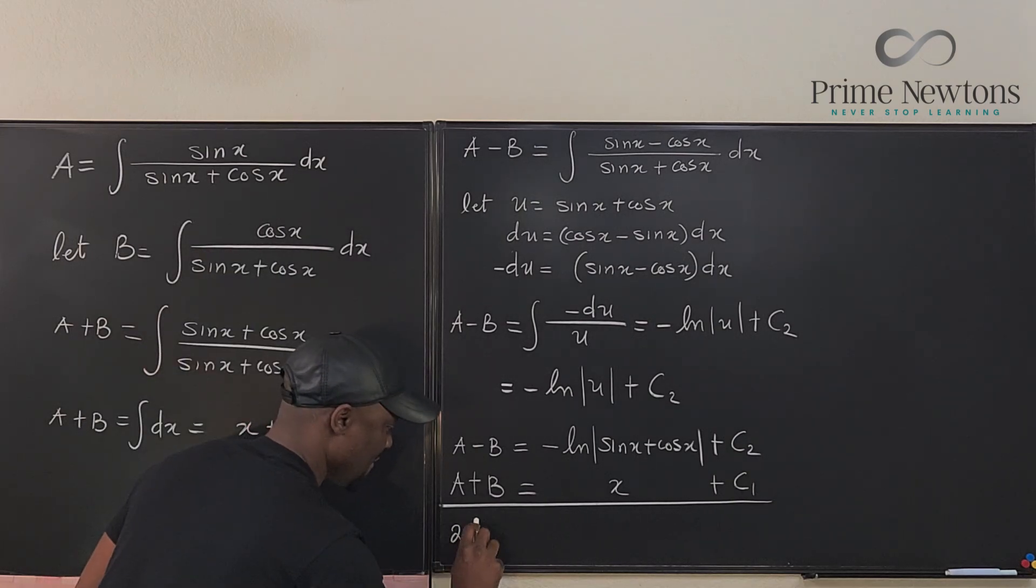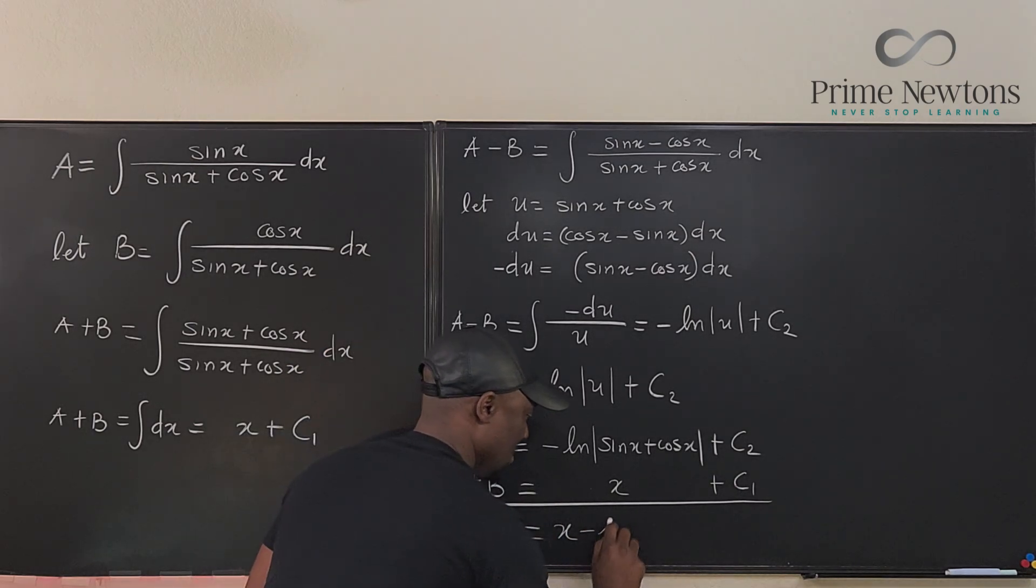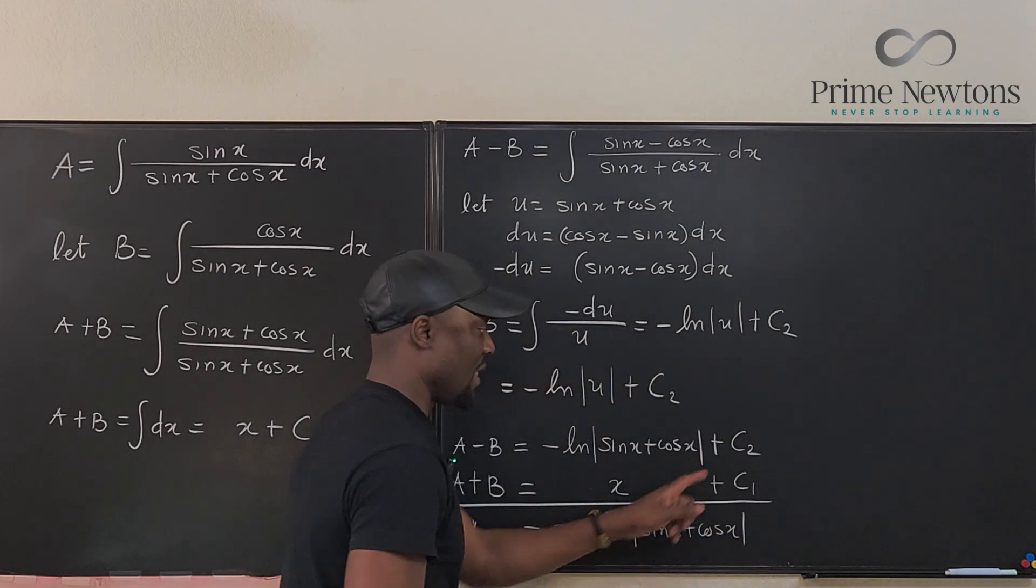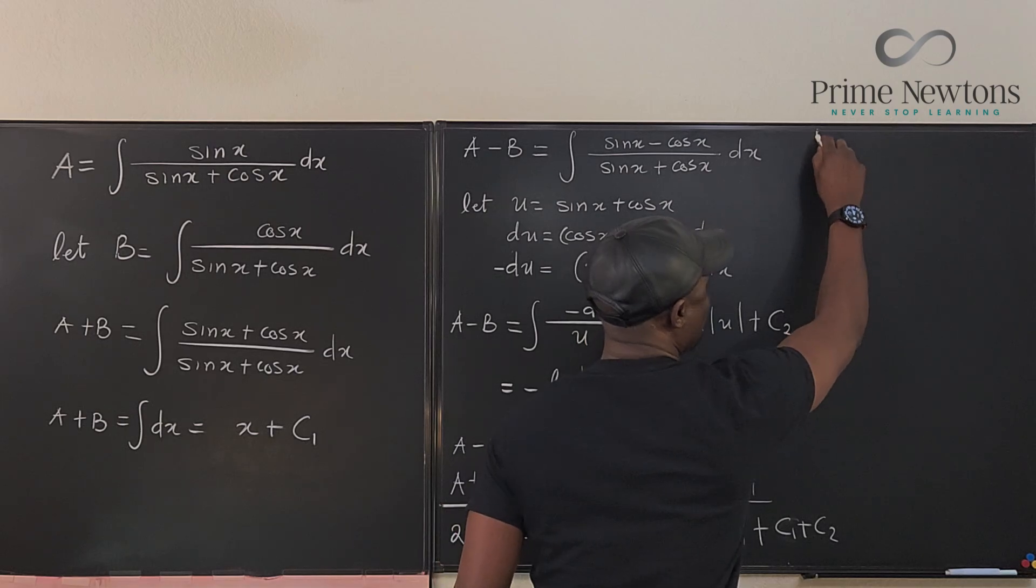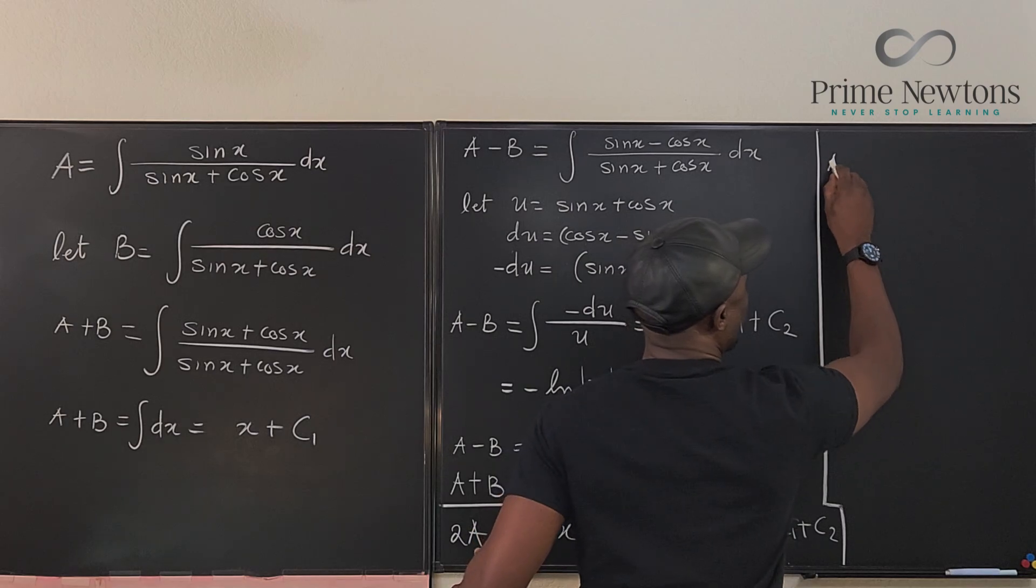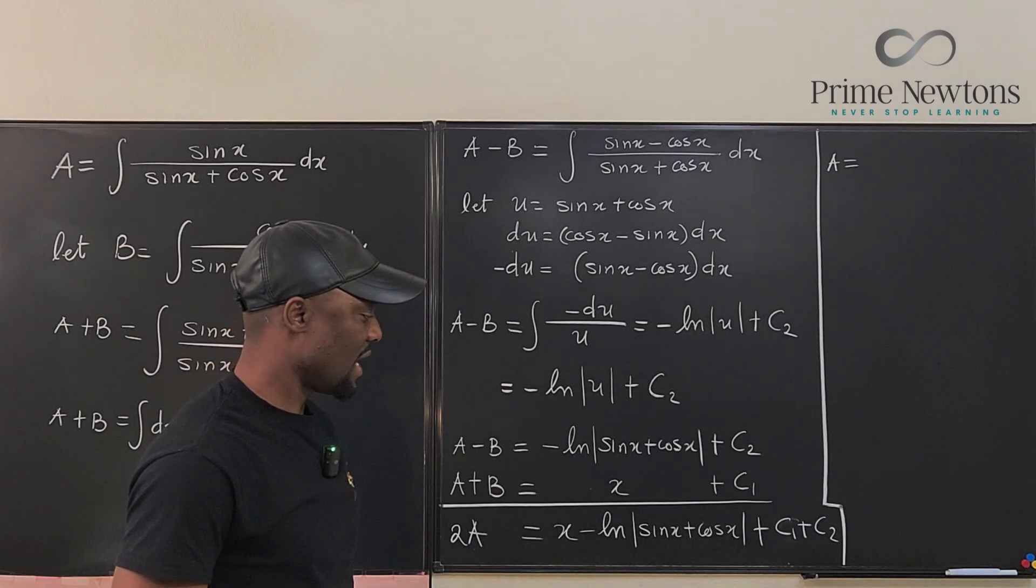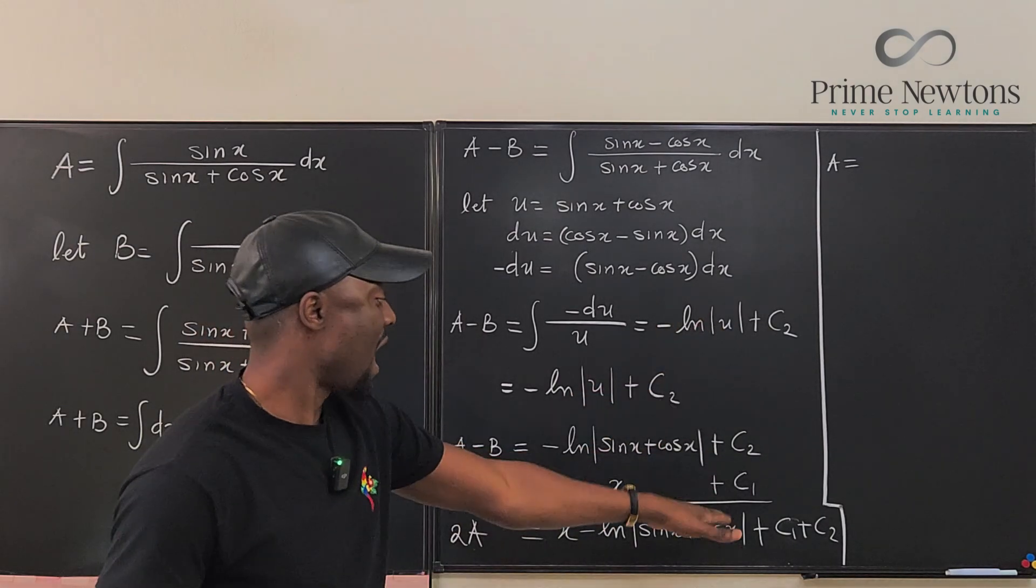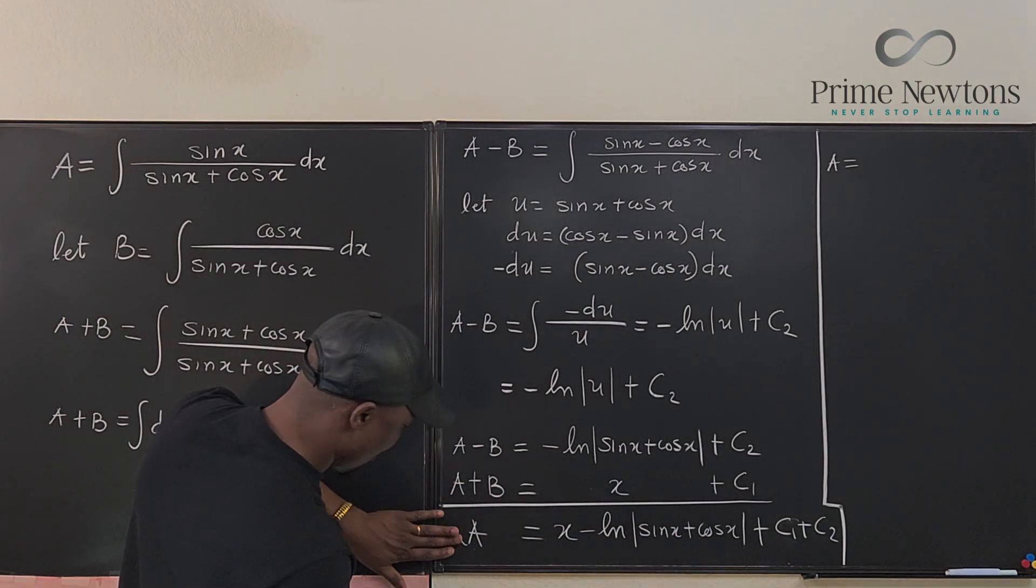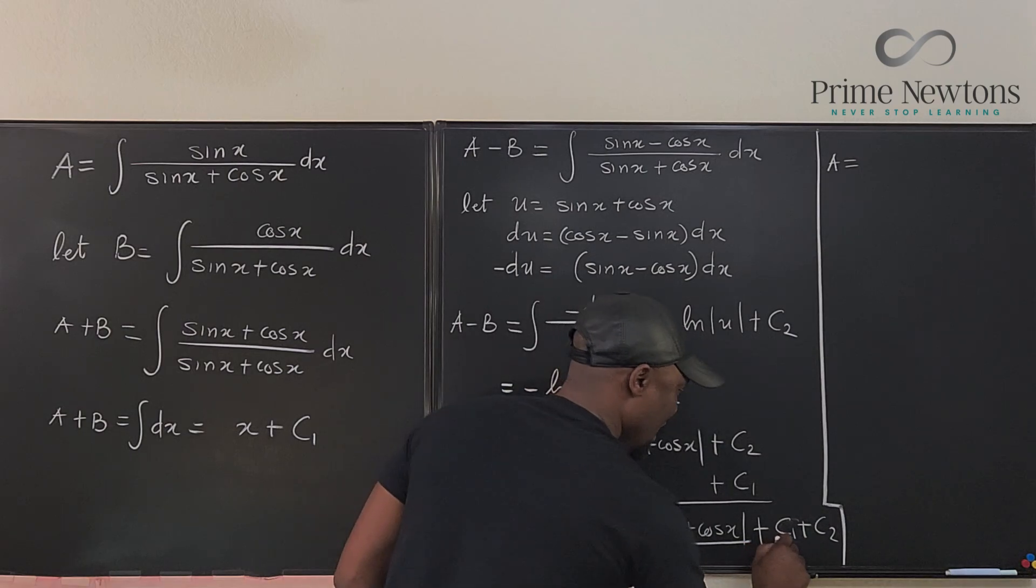If I add these two together, I get 2A equals this added to this. So I'm going to have x minus ln of the absolute value of sin(x) plus cos(x). So now I can say that A will be equal to x over 2 minus half of ln of sin(x) plus cos(x) plus C. Everything over 2.